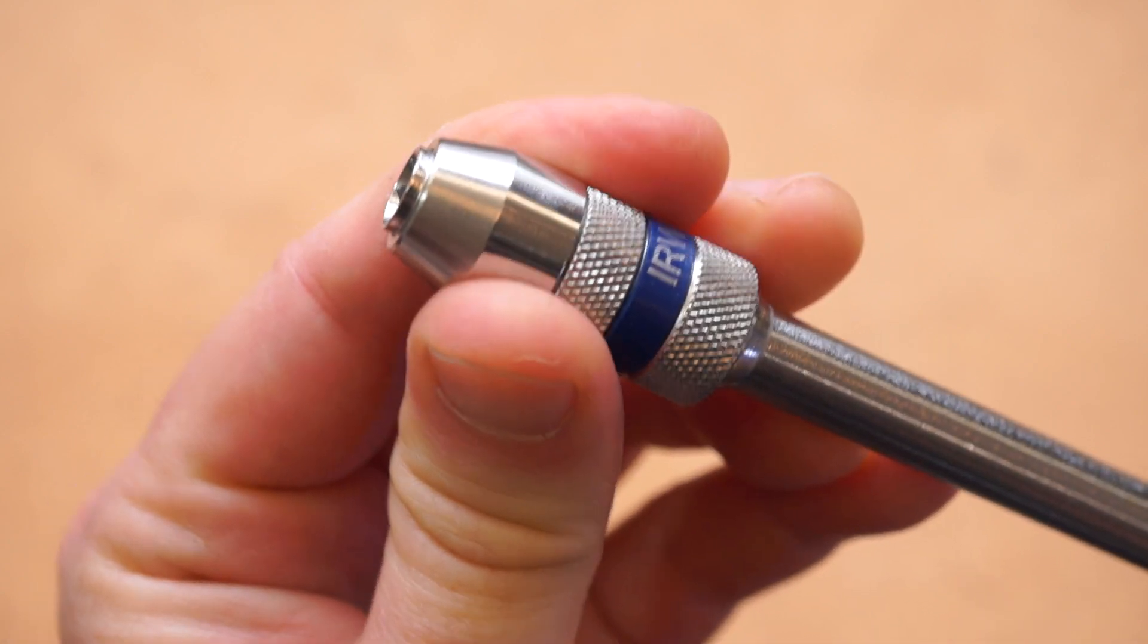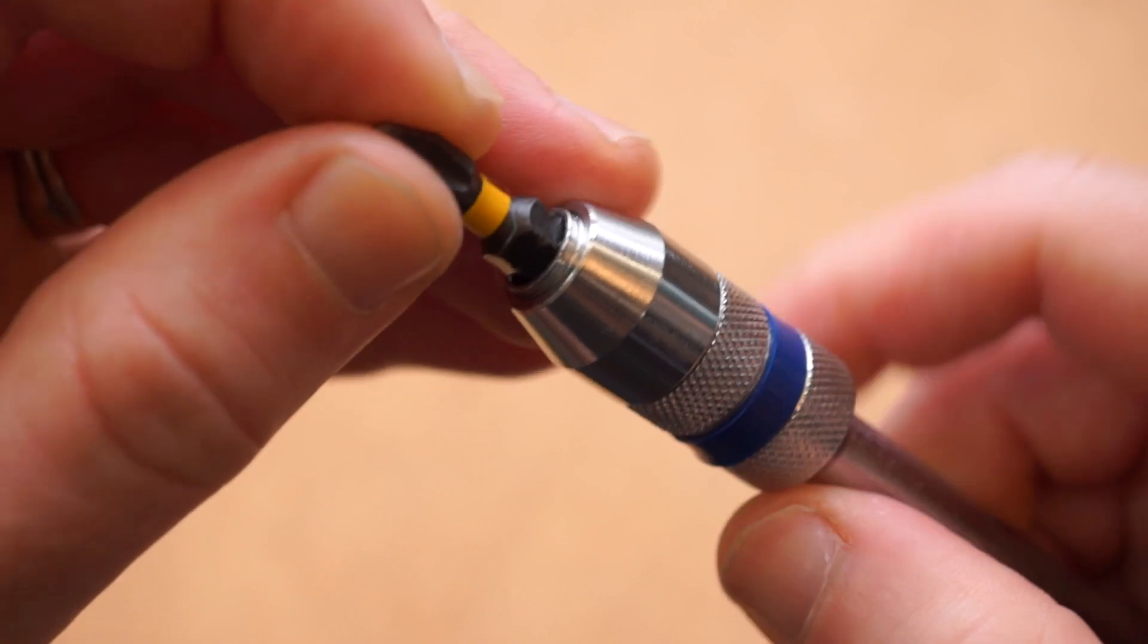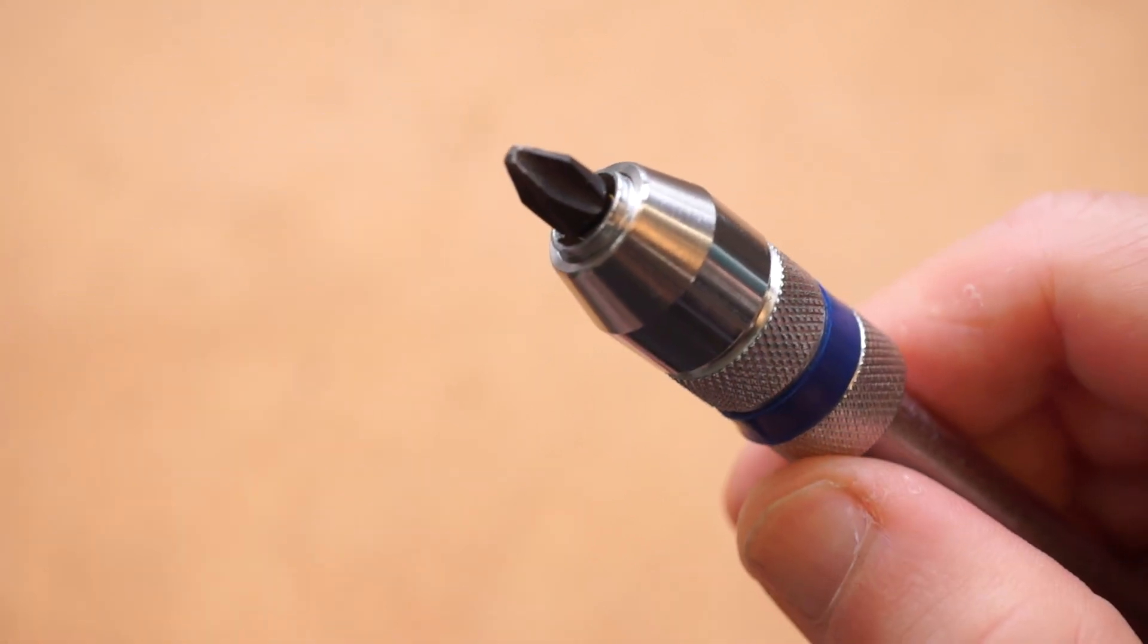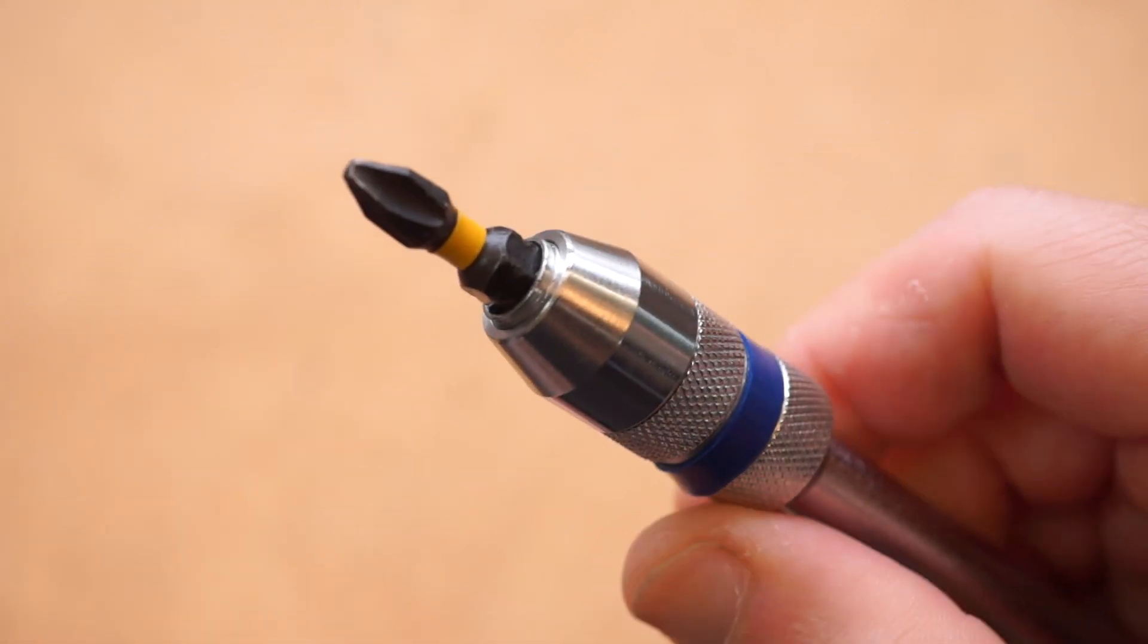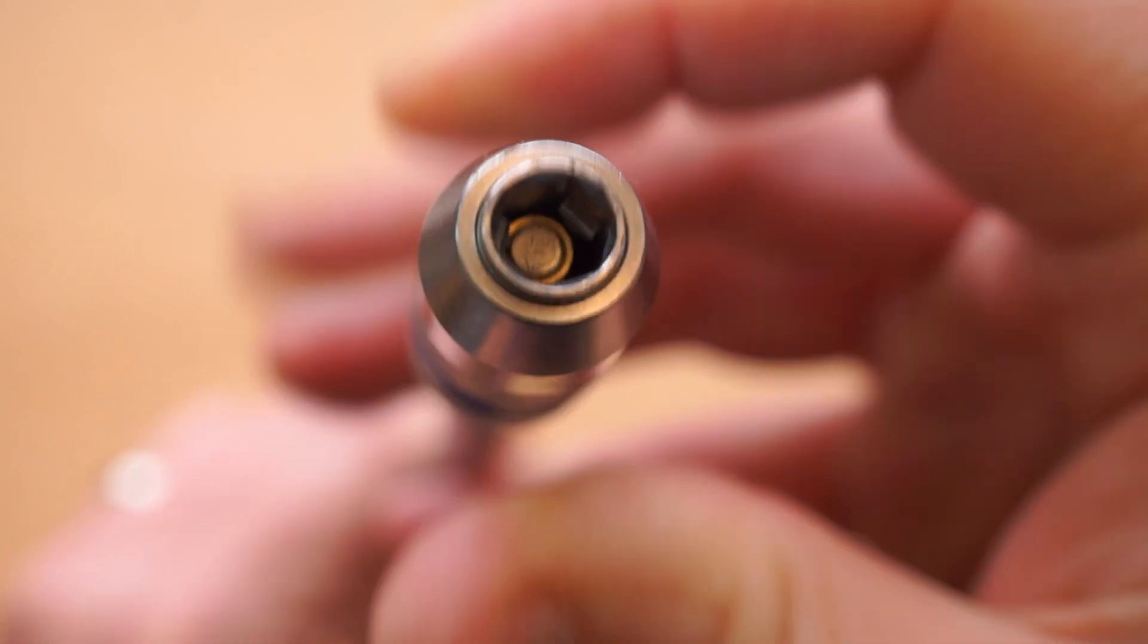There's a spring-loaded collar around the bit holder that locks in whatever you're using. You pull back to open it up, you push in the bit, and let the collar go to lock it in. That same motion shoots it back out. There's also a small magnet down in the throat of the bit holder that helps to hold the bit in place.